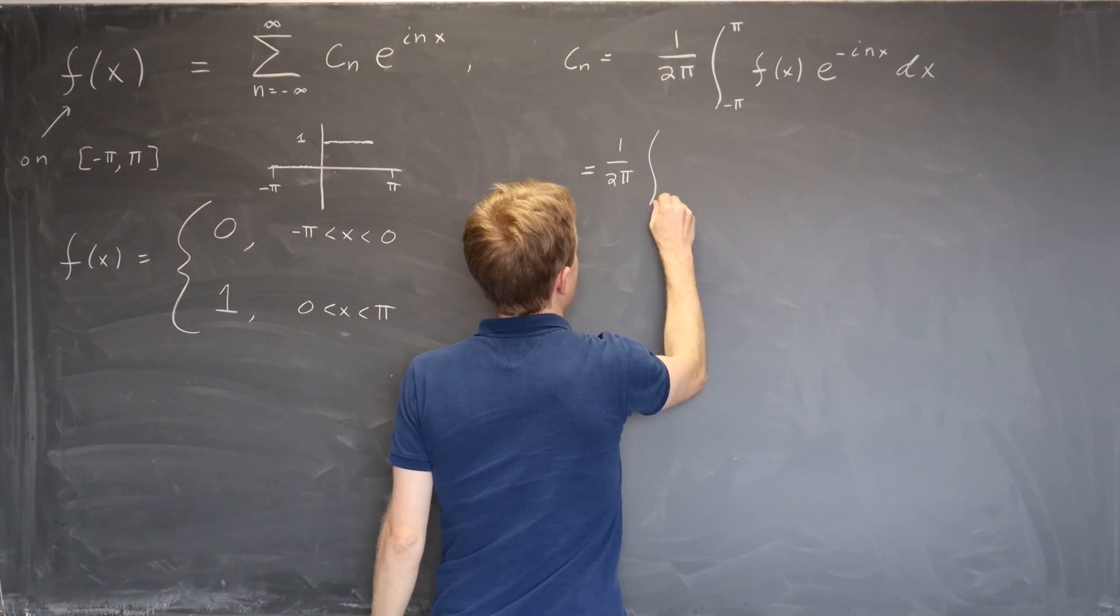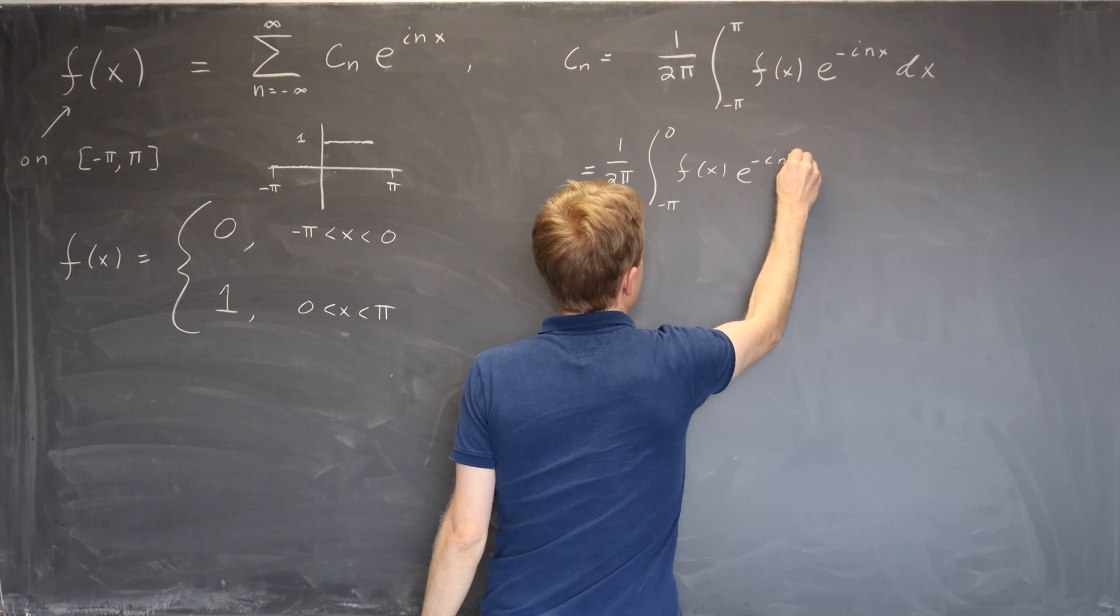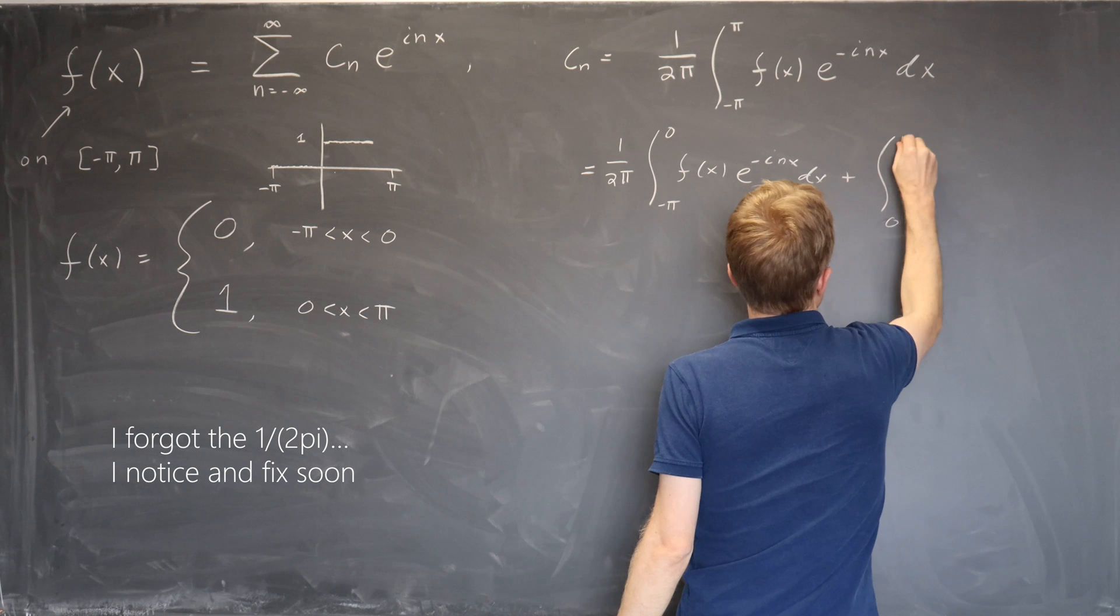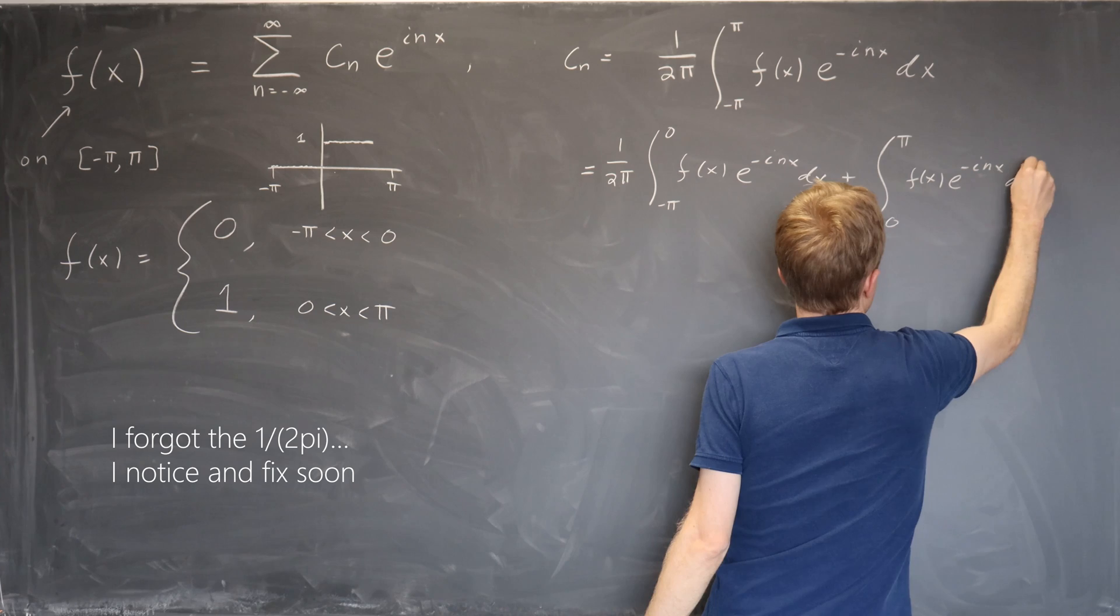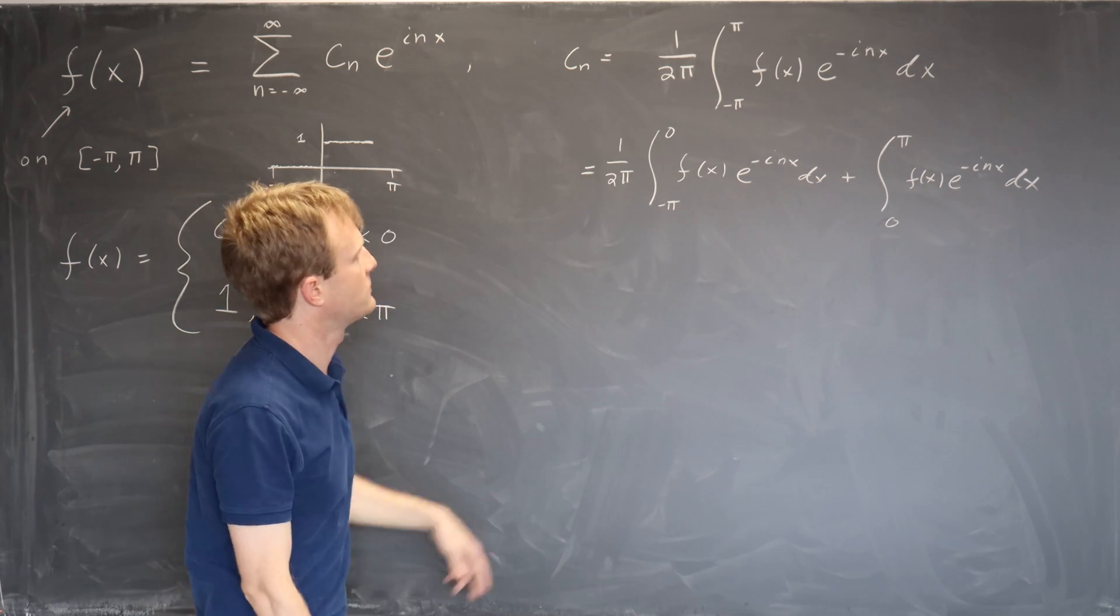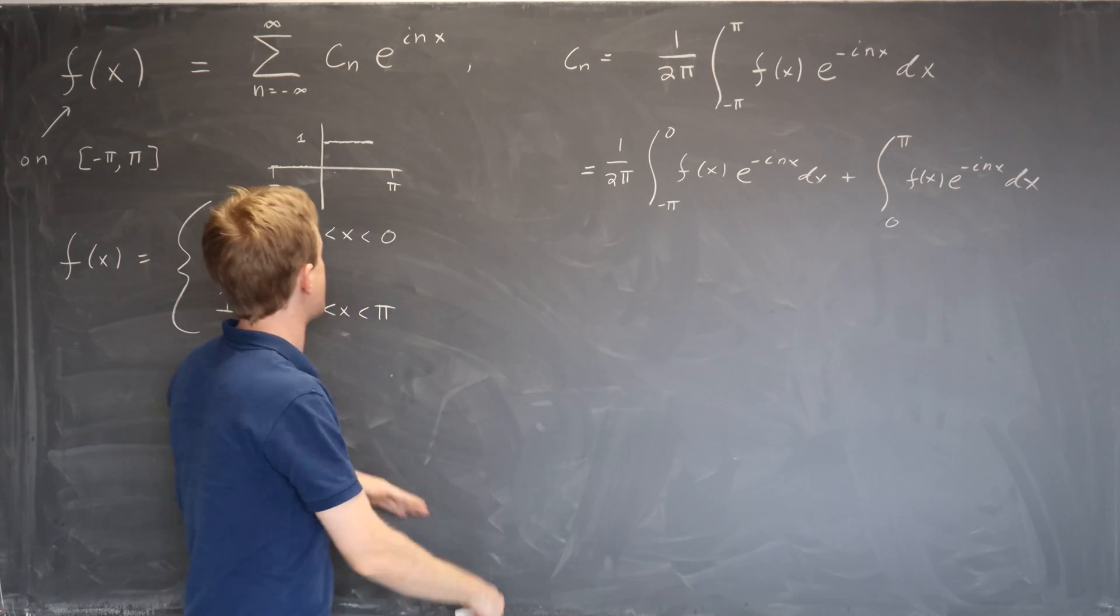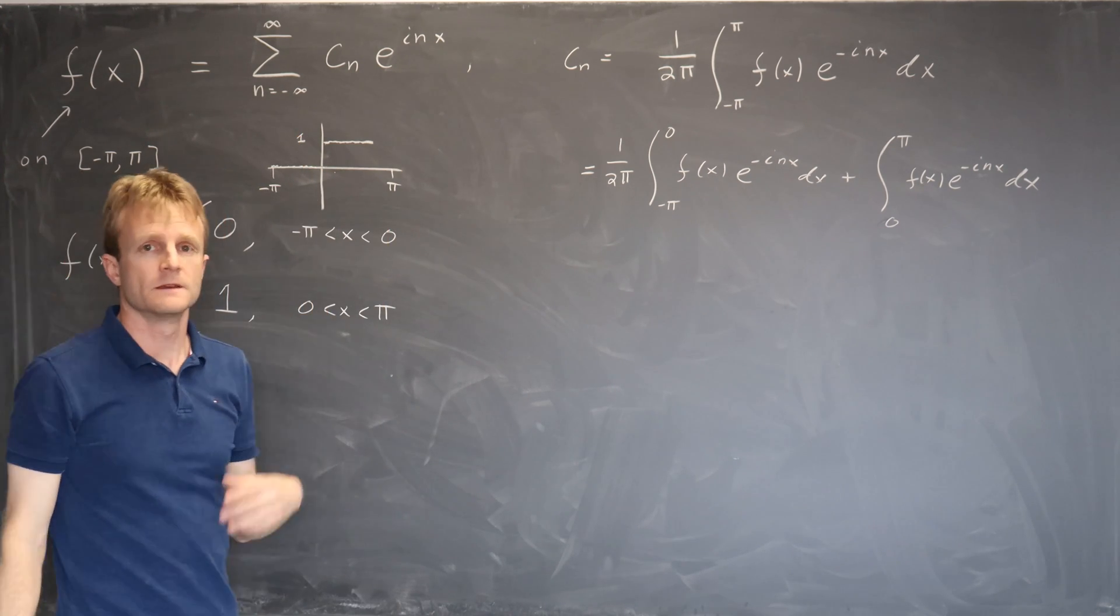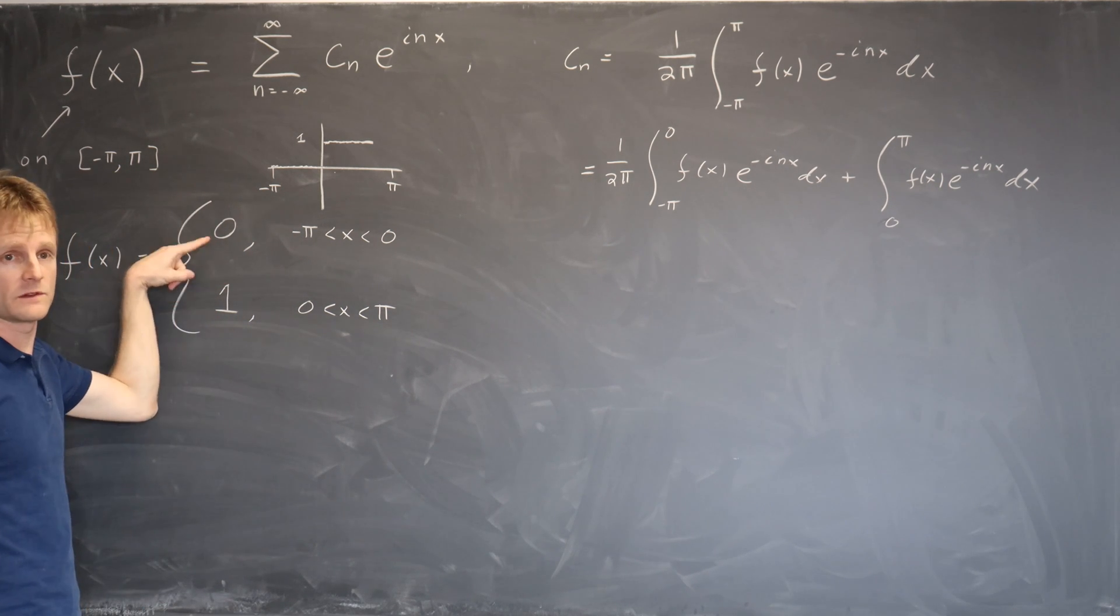So first the integral. Well, we're integrating a function f(x) that we've given in two pieces. So the first thing to do is to split up the integral into those two pieces. So it's 1 over 2 pi times the integral from minus pi to 0 of f(x) e to the minus inx dx, plus the integral from 0 to pi of f(x) e to the minus inx dx. I've just taken an integral from minus pi to pi and written it in two pieces.